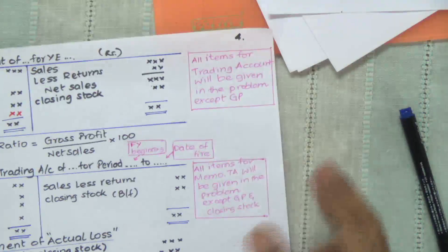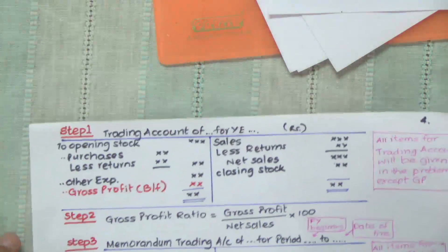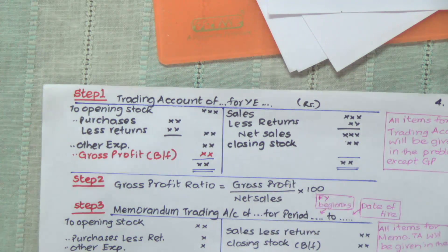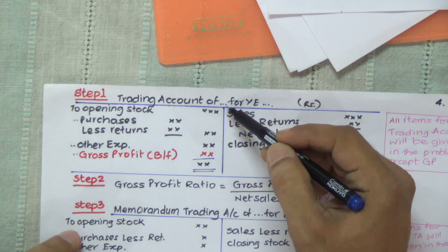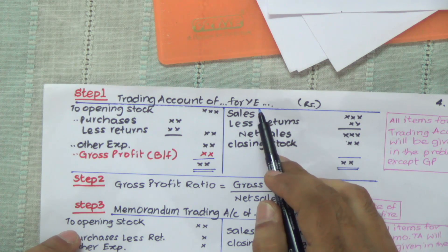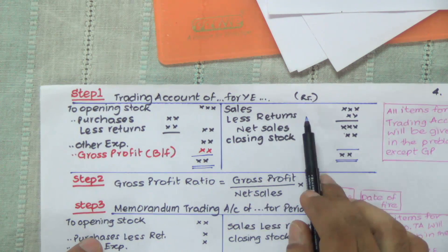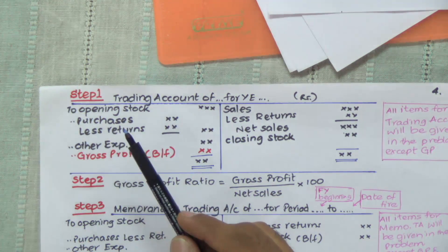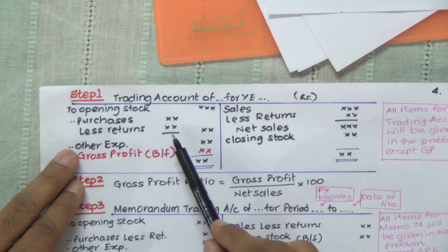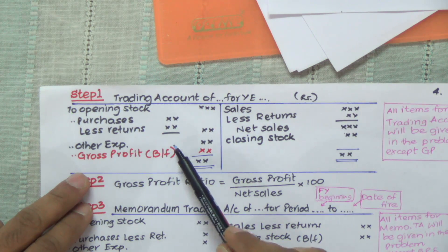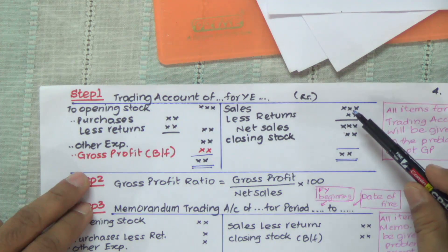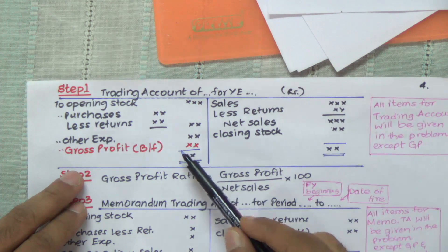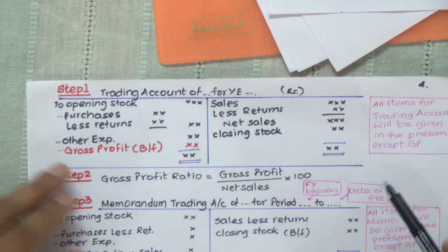Now let's go to the procedure of working out the sum. This is a very procedure-oriented chapter. Step one is the trading account of a particular business unit. This represents the name of the business unit — trading account of so-and-so, for the year ending a particular year. In this trading account, it's a regular format which all of you are used to — nothing new. On the debit side we have opening stock, then we add purchases less returns, and we take the other expenses. On the credit side, net of sales, and we add up closing stock. The balancing figure would be gross profit. This is what we have been doing all this while — there's nothing new.